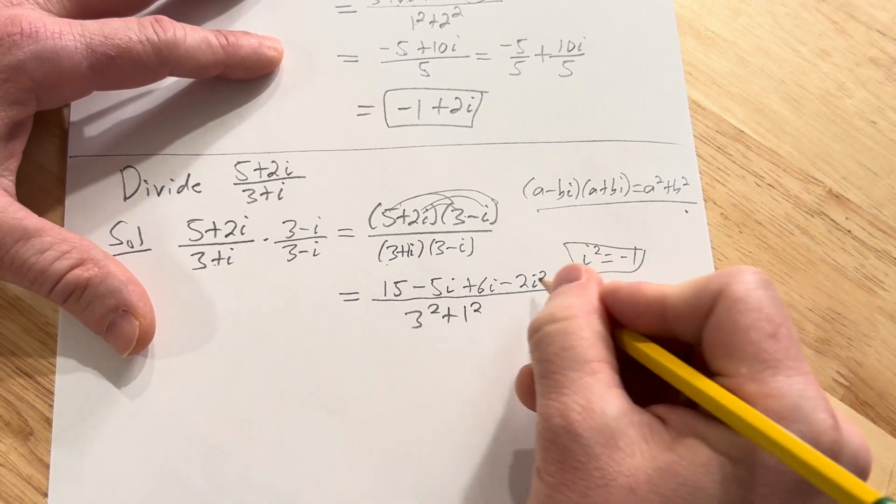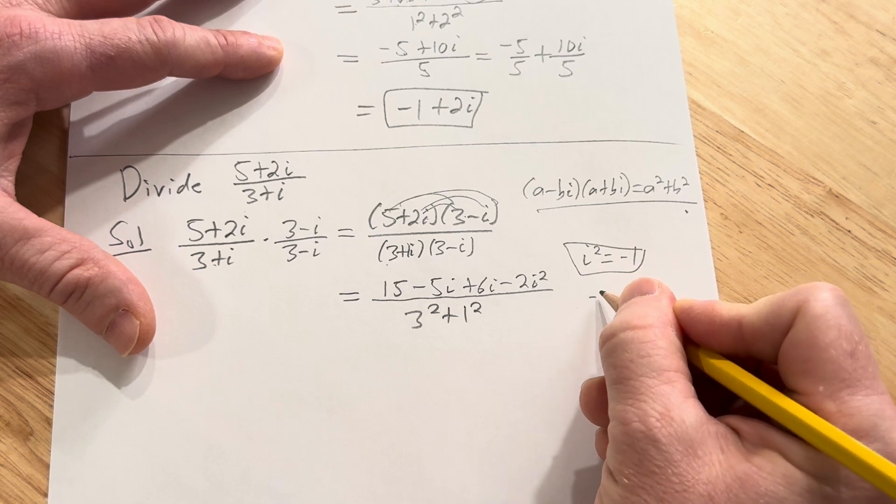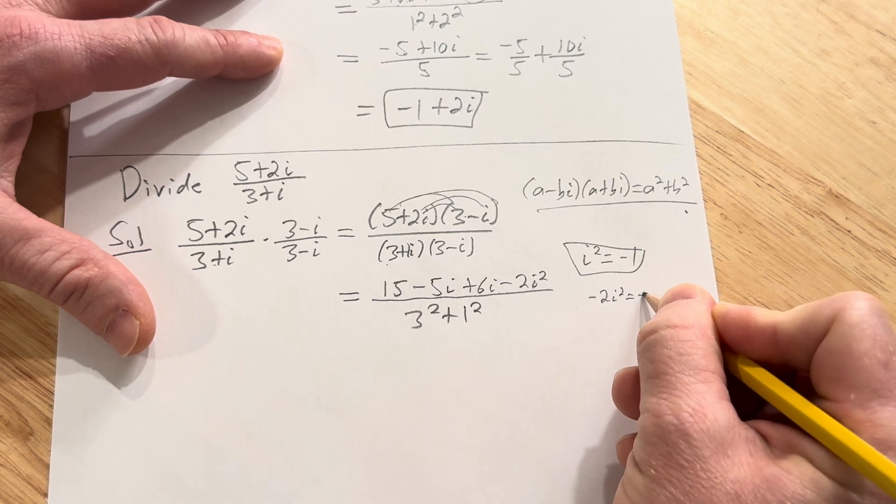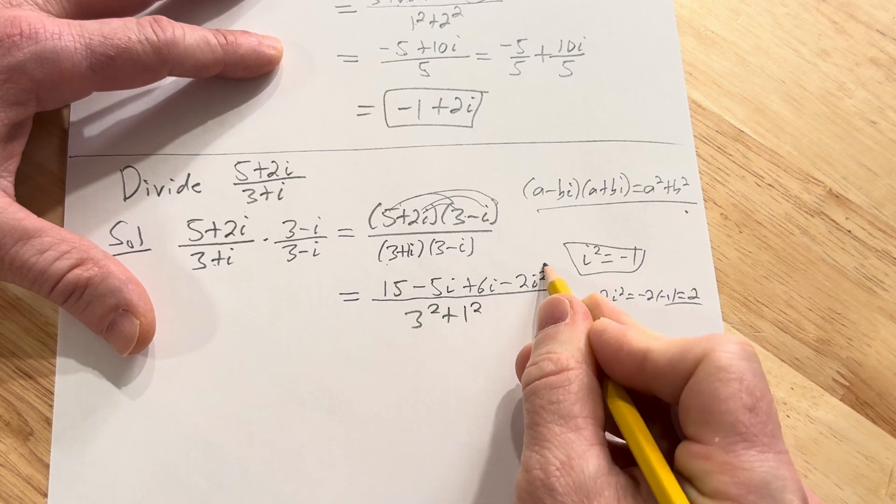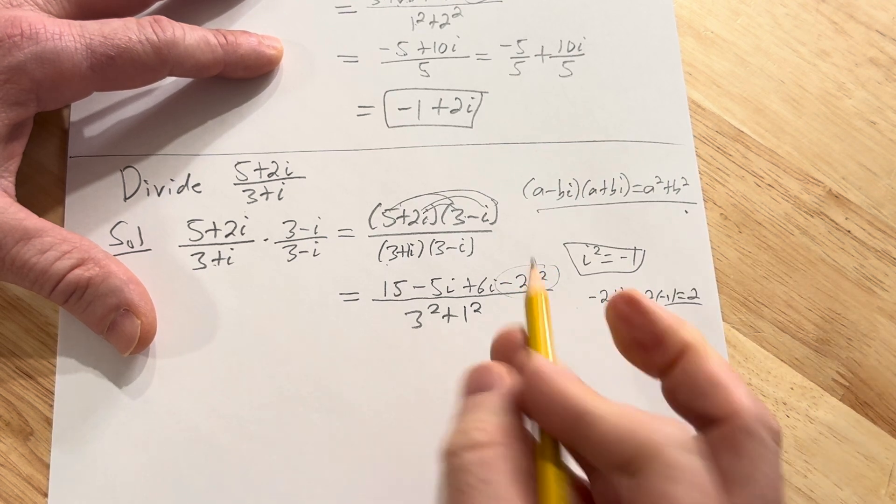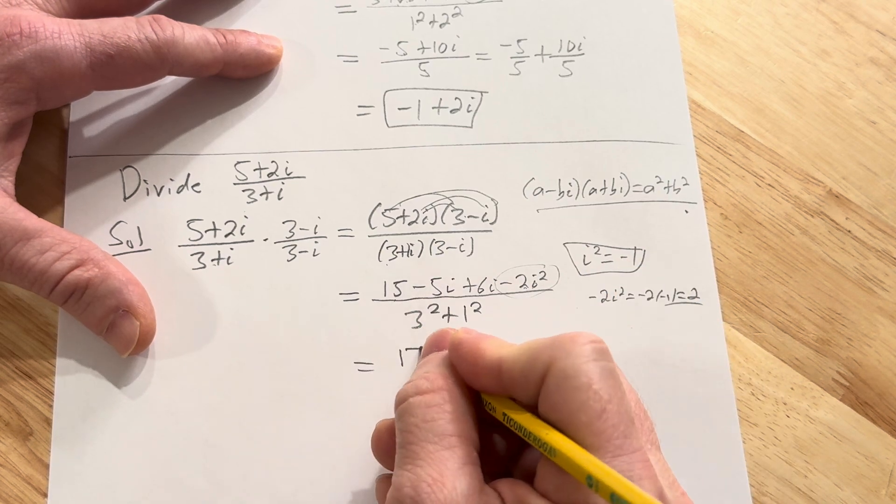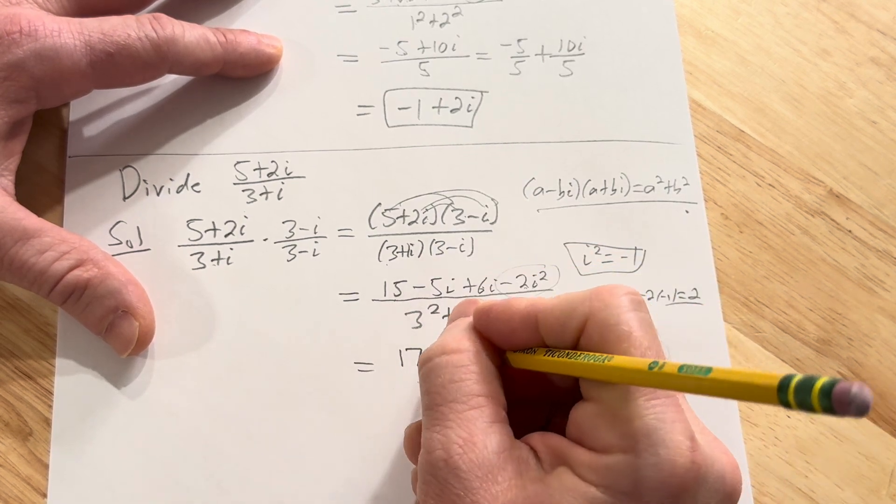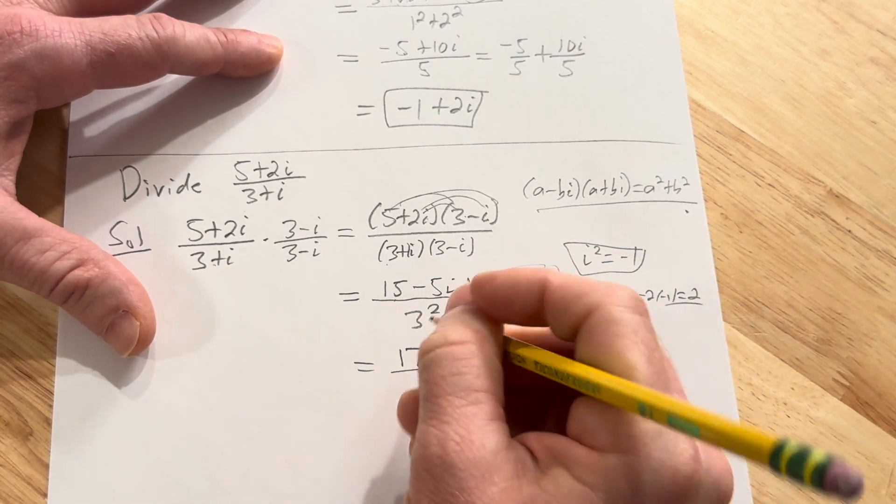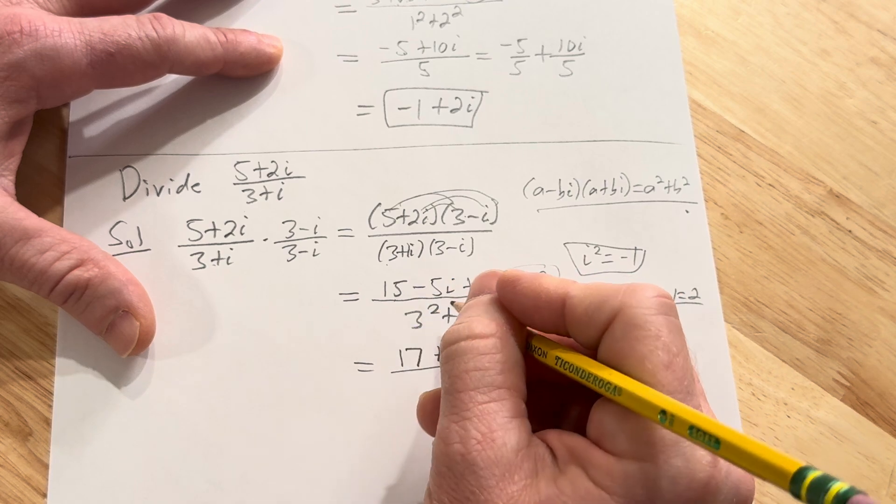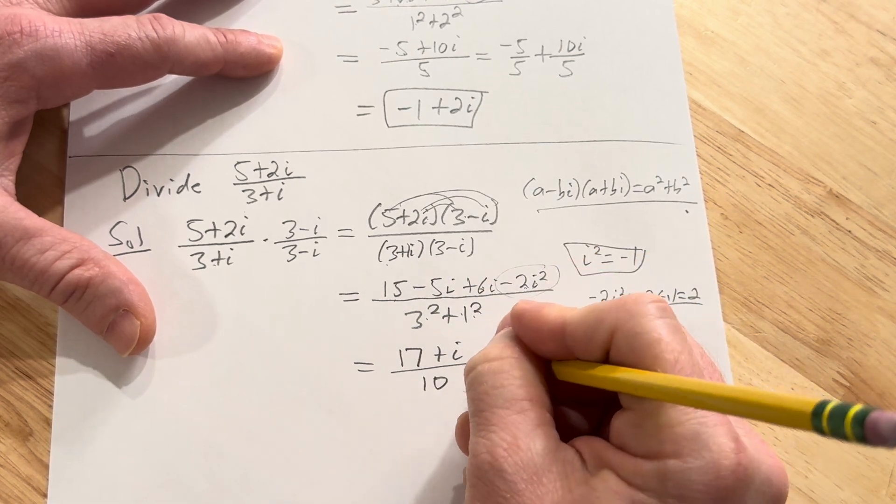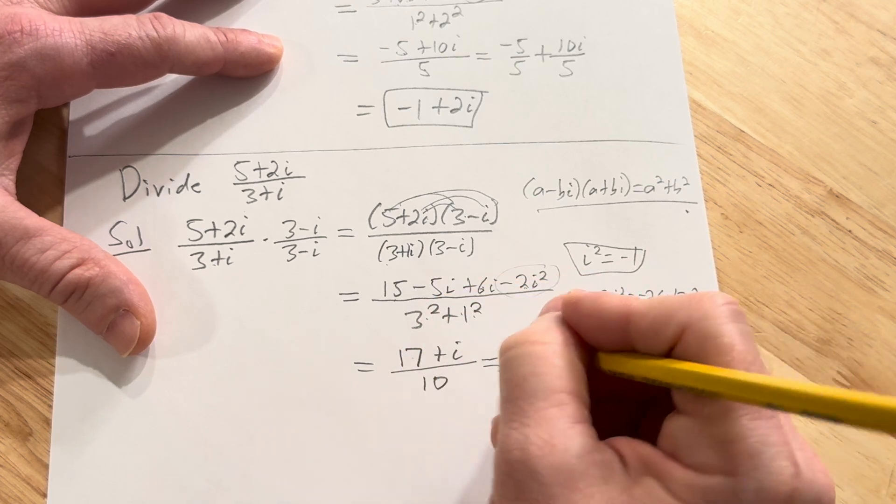Okay. This is going to be negative... it's going to be 2, because it's negative 2i squared which is negative 2 times negative 1 which is 2. This is going to become a positive 2. So 15 plus 2, that's going to be 17. Negative 5i plus 6i is i. Over, and then here we have 3 squared plus 1 squared, it's 9 plus 1, so it's 10. Very nice.